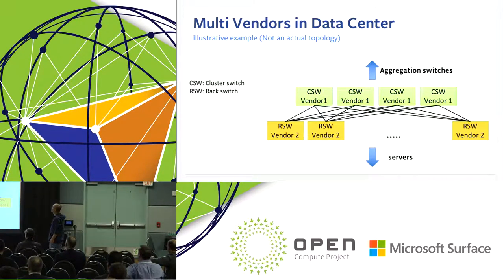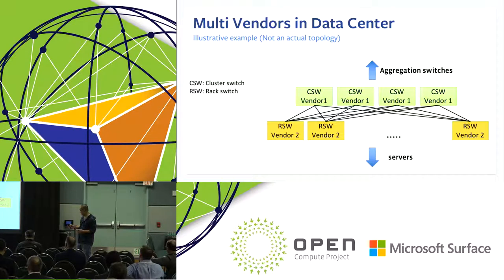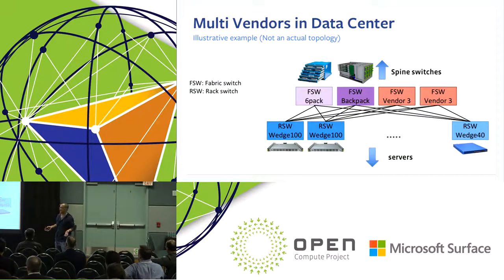This is an illustrative example of our multi-vendor environment in the data center. When we first began to design our network architecture, the design was relatively simple, and at each layer we tried to get network devices from a single vendor — at that point, network management was relatively simple. Later, we introduced our OCP switch, and things became a little more complex. Right now in the fabric, things are pretty complex: we have Six-Pack, Backpack, Web 100, Web 40, plus vendor devices. Our network management system needs to ensure all these devices can operate correctly together.